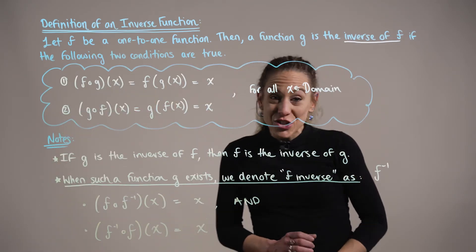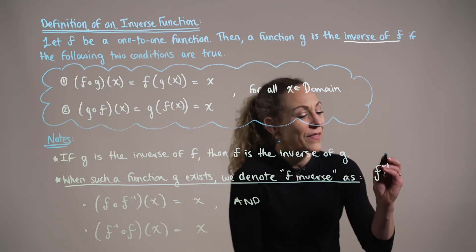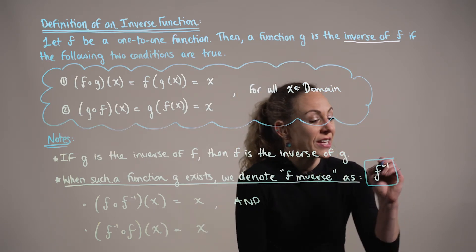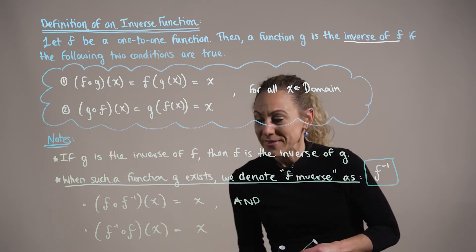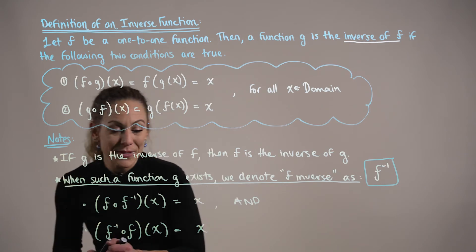So when such a function g exists, we denote the inverse of f using that same notation f to the negative one. And we can apply this inverse notation to our composition definition.